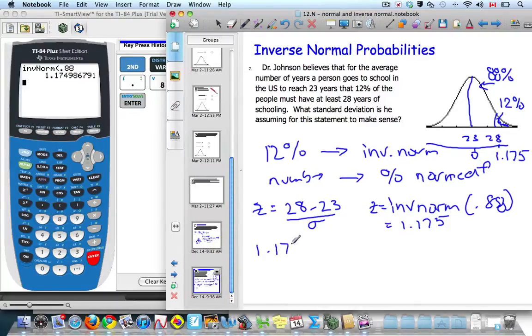1.175 equals 28 minus 23 is 5, over the standard deviation. And if I solve this for standard deviation now, it equals 5.